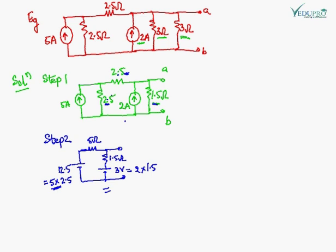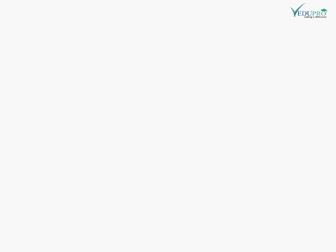The Rsh is in series with the voltage source. The magnitude of this voltage source is calculated as 2 multiplied by 1.5, which gives 3 volts. In the third step, I have further transformed this voltage source back into a current source. The magnitude of this current source is 2.5 ampere.